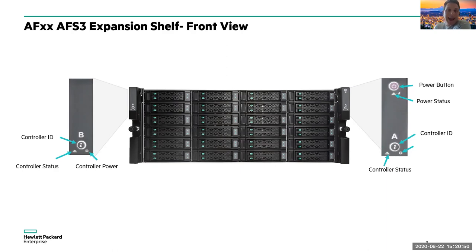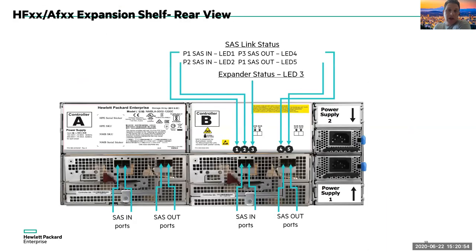When adding expansion shelves, they're connected with SAS cabling — specifically 12 Gb SAS connections. We're talking about Gen 5 systems specifically, but it's been 12 Gb SAS connections for all Gen 1, Gen 2, Gen 3, and Gen 5 systems. There is no Gen 4.